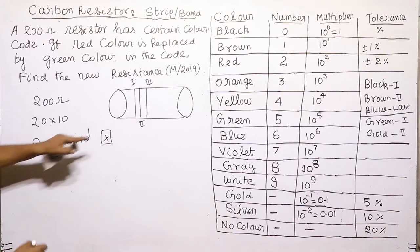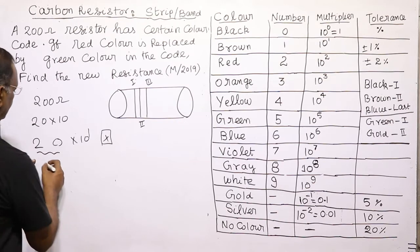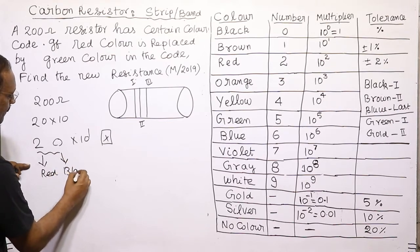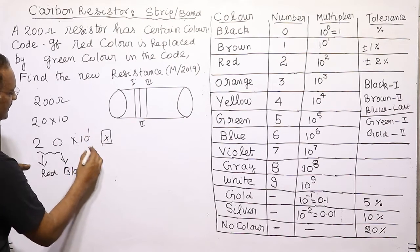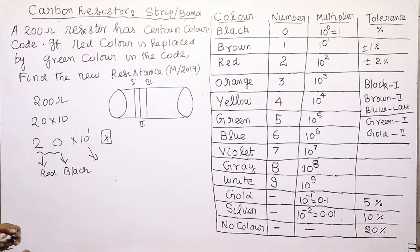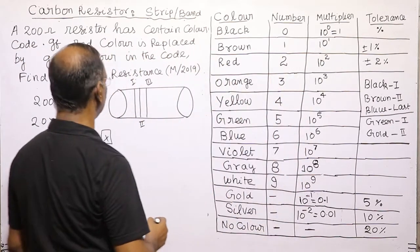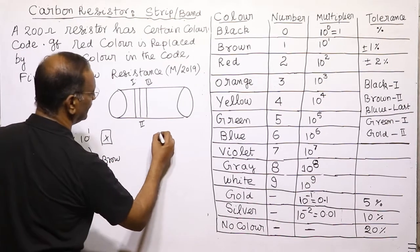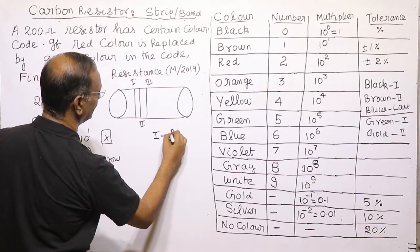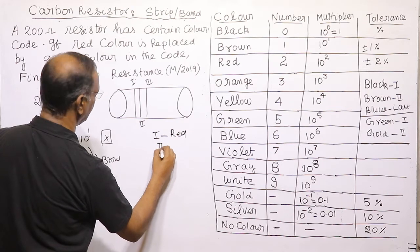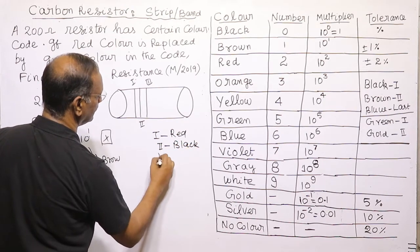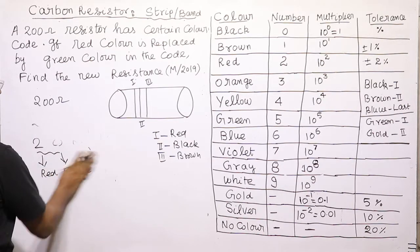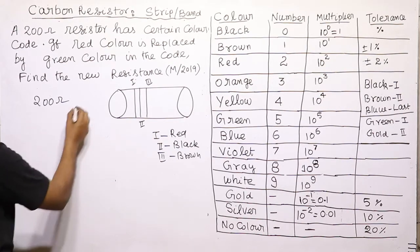The first two bands are digits. For 200 ohm: first digit is 2, which stands for red; second digit is 0, which stands for black. The multiplier is 10 to the power 1, which stands for brown. So the color code for 200 ohm is: first band red, second band black, third band brown.